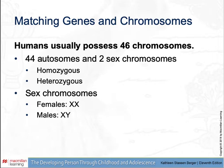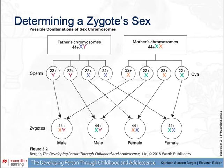The sex of the offspring depends on whether the father's Y-sperm or X-sperm fertilizes the ovum. Any given couple can produce four possible combinations of sex chromosomes — two lead to female children and two lead to male children. For X-linked conditions, it matters a great deal which X the zygote inherited, because typically one but not both of the mother's X chromosomes carries the trait.